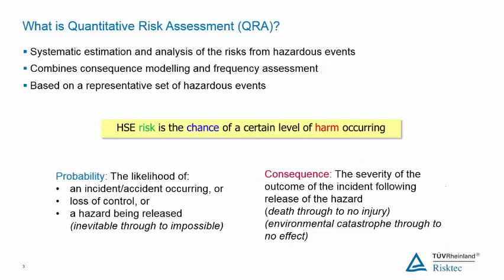QRA does not include every single hazardous event which might occur — it just includes a representative set. But it does include all the significant hazards identified in the hazard study. Similar hazardous events are normally grouped and assessed together. An array of software packages exist for carrying out consequence modelling, frequency assessments, or entire QRAs, but these calculations are often done using spreadsheets.